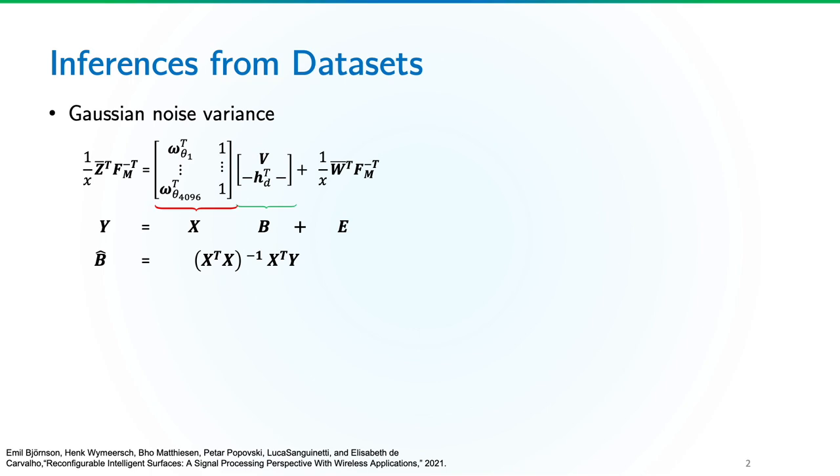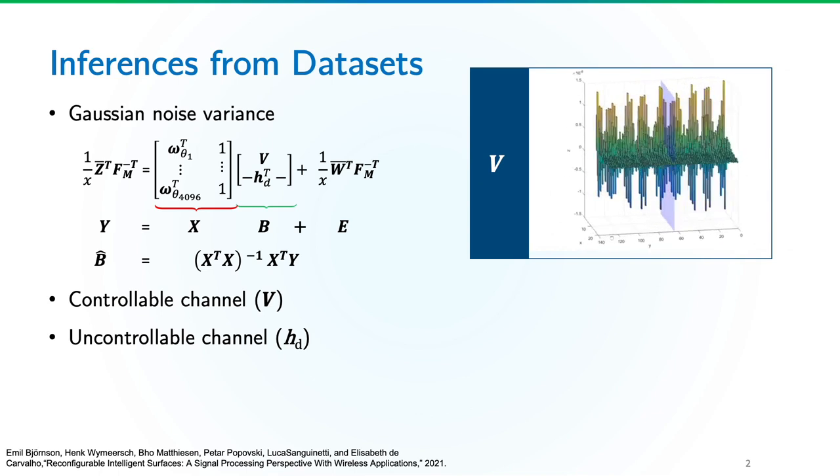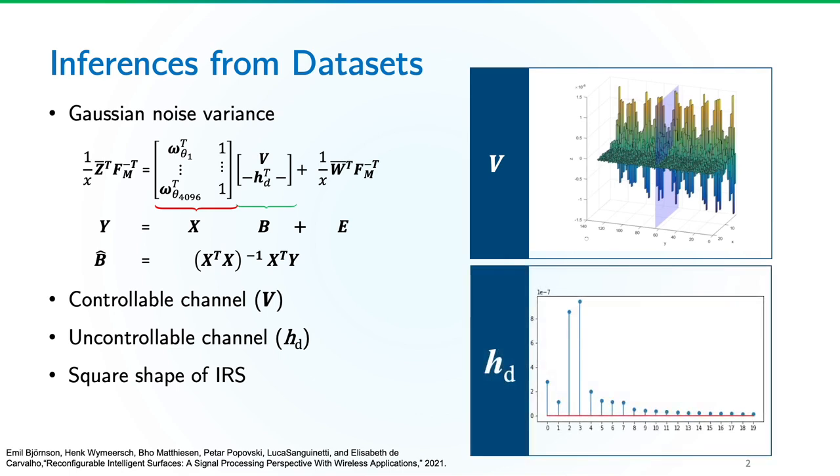It includes the controllable channel B and the uncontrollable channel HD. We observed that each tap in B is periodic. This justifies the geometry of the IRS to be square-shaped. HD resembles a typical multipath fading channel and its faithful representation is significant, especially for non-line-of-sight users. Thus, both B and HD should be estimated accurately. We concluded that dimensionality should be reduced as we will have more unknowns than data points.